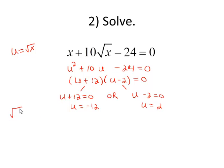Change the substitution back. Replace u by the square root of x. So here I have the square root of x equals negative 12. A square root can never be negative, so this will not lead to an actual solution.